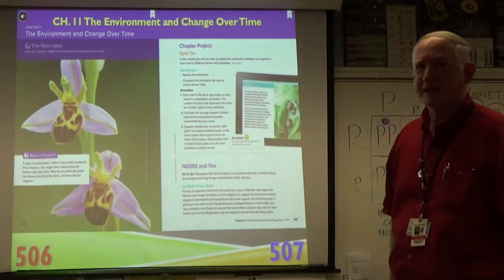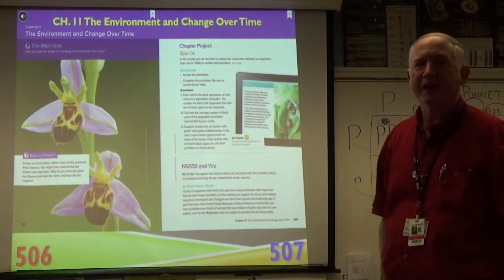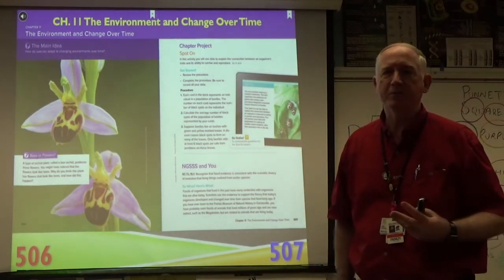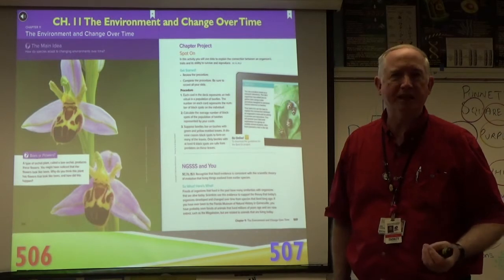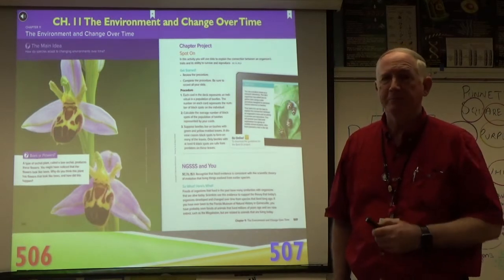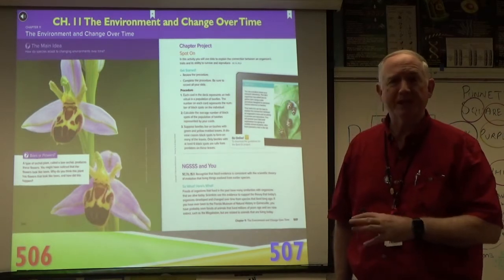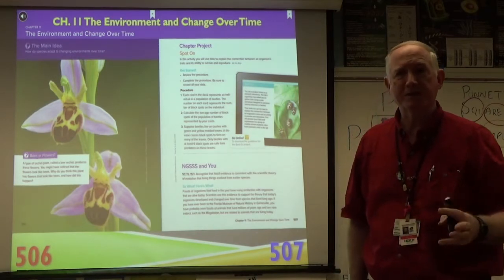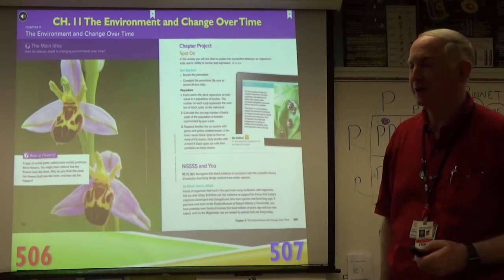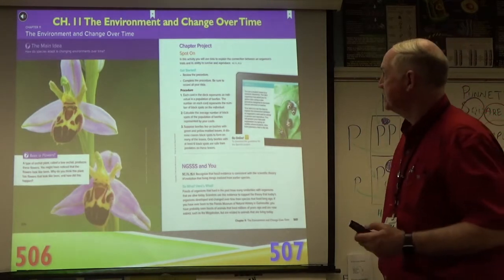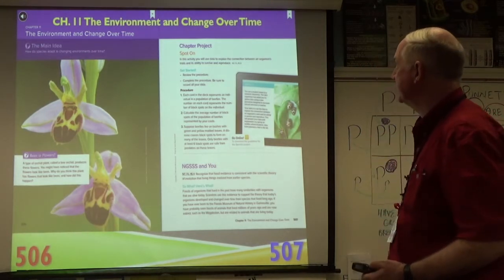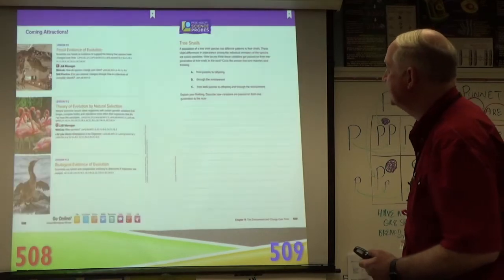The orchids didn't always exist. In fact, flowering plants only came into existence in the late Cretaceous period. Most of the time the dinosaurs had on the planet, there were no flowering plants. So things have changed over time, and we want to take a look at that.